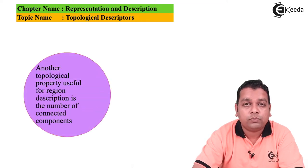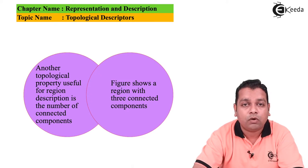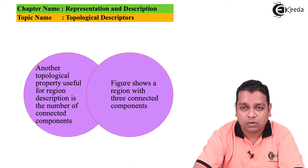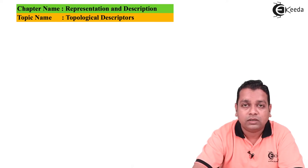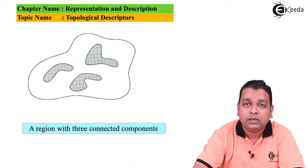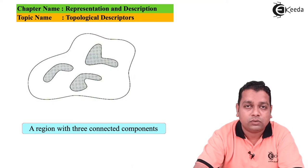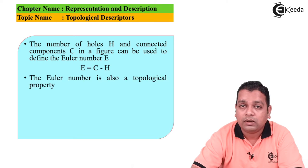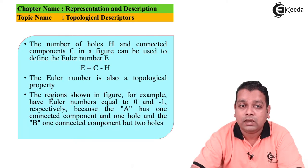Another topological property useful for region description is the number of connected components — extraction of connected components was covered in a previous chapter. Consider a figure showing a region with three connected components: these connected components are shaded, and the rest of the region enclosed by the boundary is shown as white.